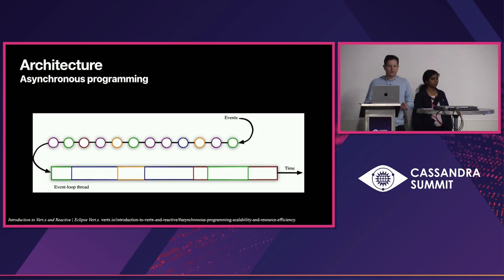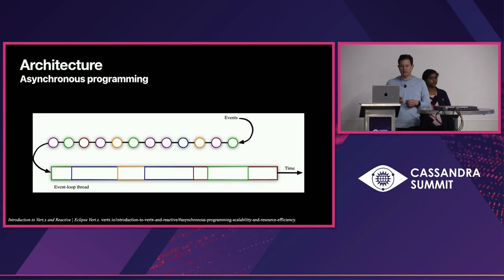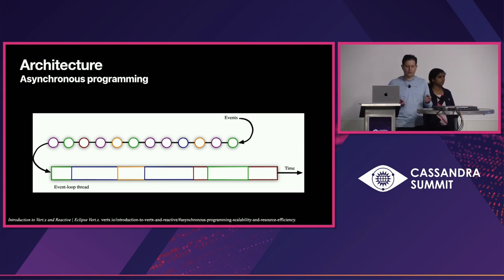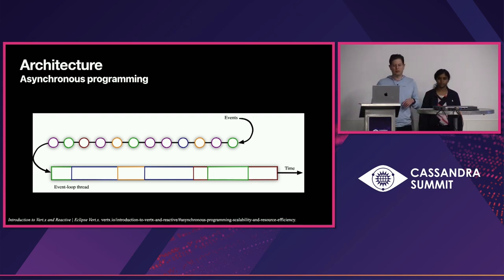For that reason, we decided to use the asynchronous programming model from Vert.x. That allows us to reuse resources more effectively — we don't need as many threads to process requests. When we have a blocking I/O operation, we just move on to the next task and come back to the initial task when that blocking operation completes.